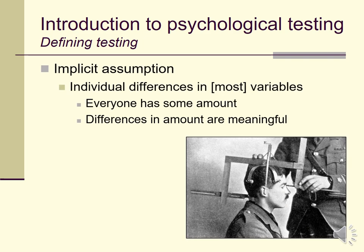There's also an implicit assumption that there are individual differences in most of these variables. We're interested in psychological constructs that people differ on — the life sciences, including psychology, are the study of variation. We believe constructs like intelligence, extroversion, alexithymia, and schizophrenia exist and can be measured, but also that they vary in their presentation across people, or even within people across time. These individual differences are important and useful: everything exists in some amount, and differences in those amounts are meaningful.